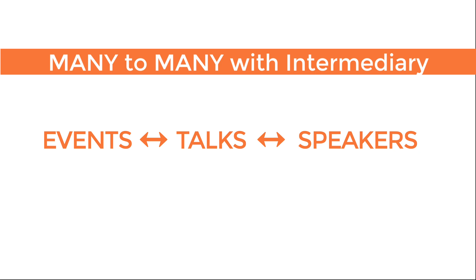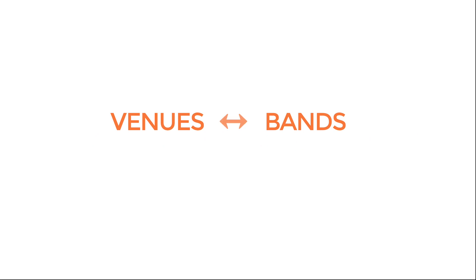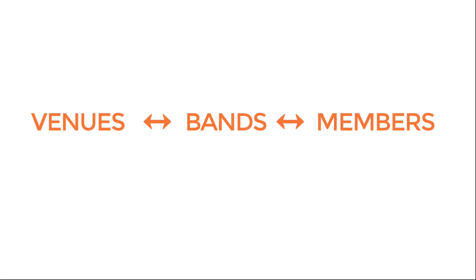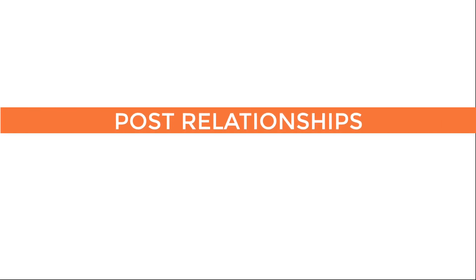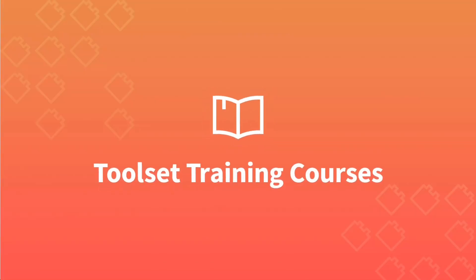Just to help you fully understand this concept, here's another example. A many to many relationship might be venues to bands, because there are many venues and bands can play at any venue. But you can also add in venues, bands, and band members, because musicians sometimes play in more than one band. There are many bands and many venues. Now that you have the concept, jump into the next video to see how Toolset makes it very easy to set up post relationships with just a few clicks.